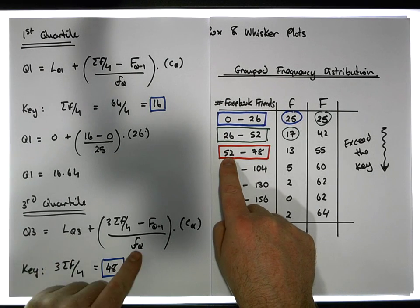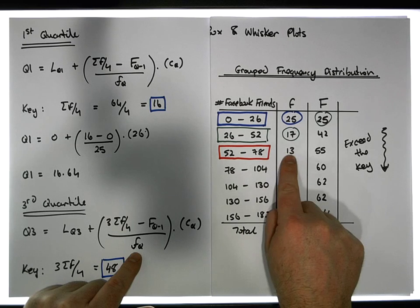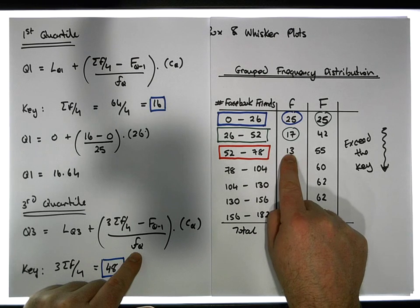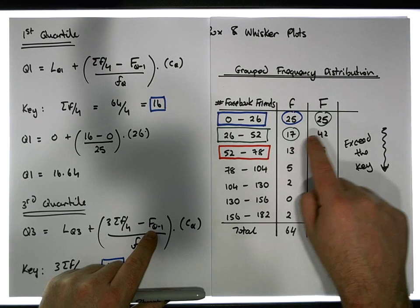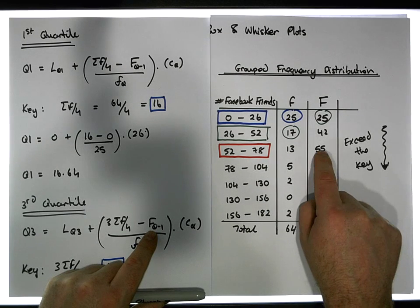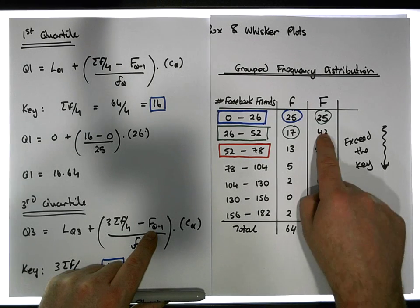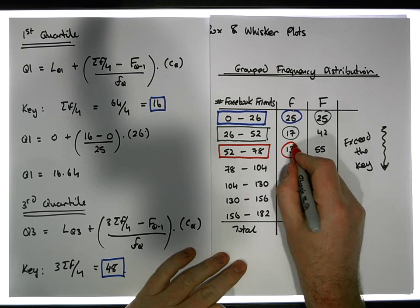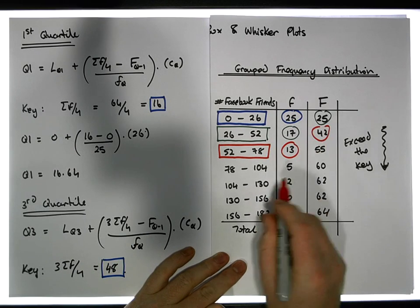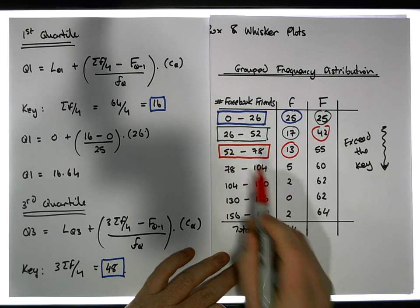Small f of Q is 13, and capital F of Q minus one — the cumulative frequency of the class before it — is 42. So our values are 13 and 42, and the width of the class is equal to 26.